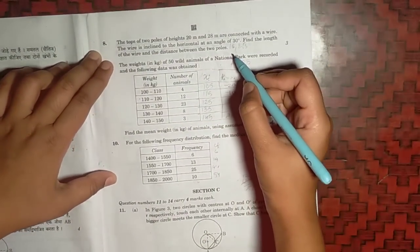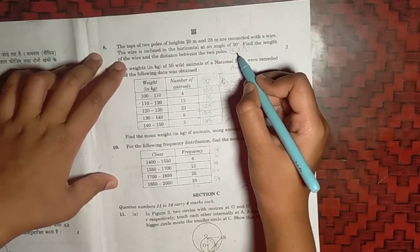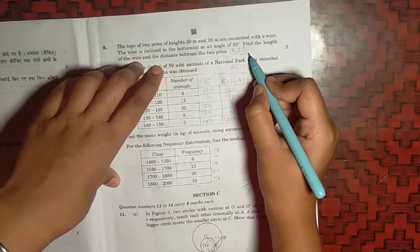Question number 8, the length of the wire will be 16 meter, and the distance between the poles will be 8 root 3.